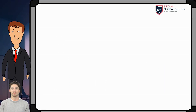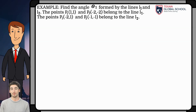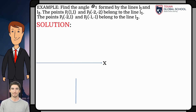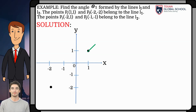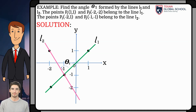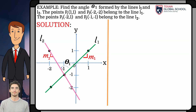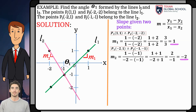Let's see a first example. We will find the angle theta1 formed by the lines l1 and l2. The points (1, 1) and (-2, -2) belong to line l1. The points (-2, 1) and (-1, -1) belong to line l2. First, let us graph, then identify the angle that is requested. For angle theta1, the initial line is l1 and its final line is l2 as indicated. So, calculate the slopes of both lines given two points, using the formula seen in previous classes. For l1, its slope is equal to 1.